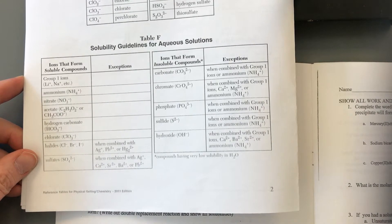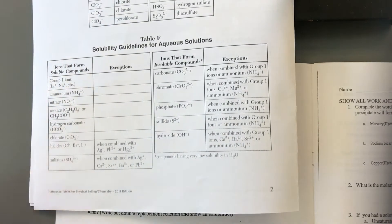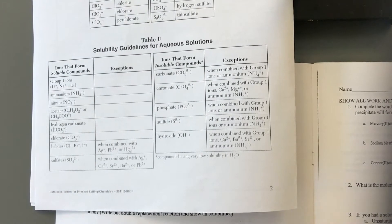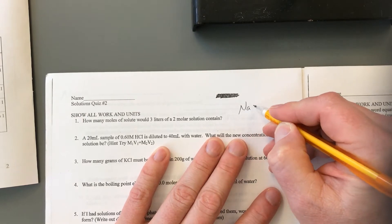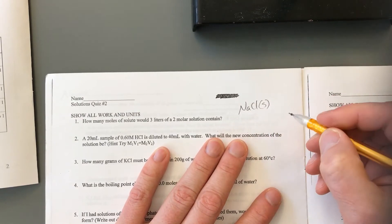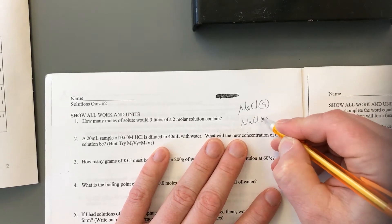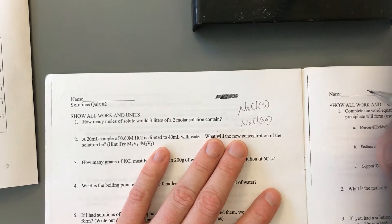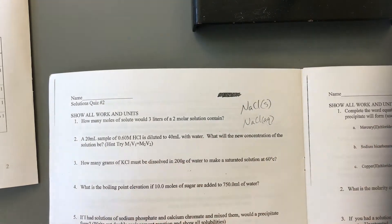In this video we're going to learn about using Table F, which is the solubility guidelines for aqueous solutions. An aqueous solution is a solution where a solute is dissolved in water. When you see the abbreviation AQ in lowercase next to a formula, it typically means it's dissolved in water. For example, NaCl can be listed as a solid, but if it's dissolved in salt water, NaCl(aq) could be a final product.